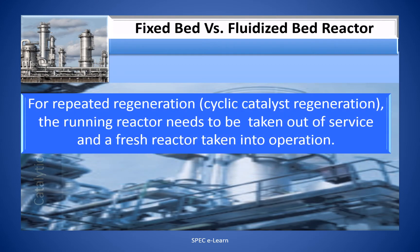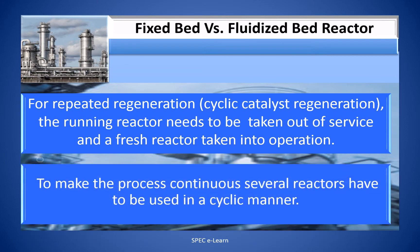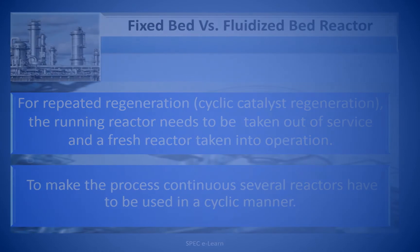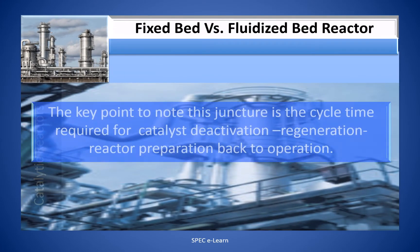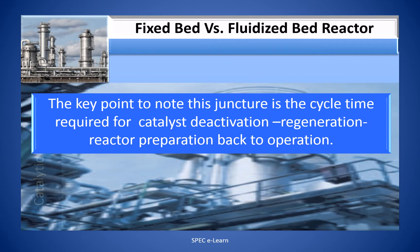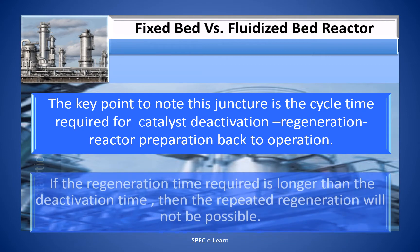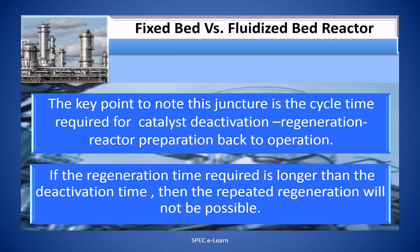For repeated regeneration, also called cyclical regeneration, the running reactor needs to be taken out of service and a fresh reactor has to be put into operation. To make the process continuous, several reactors have to be used in a cyclical manner. The key point to note is the cycle time required for catalyst deactivation, regeneration, and reactor preparation back to operation. If the regeneration time required is longer than the deactivation time, then repeated regeneration will not be possible.